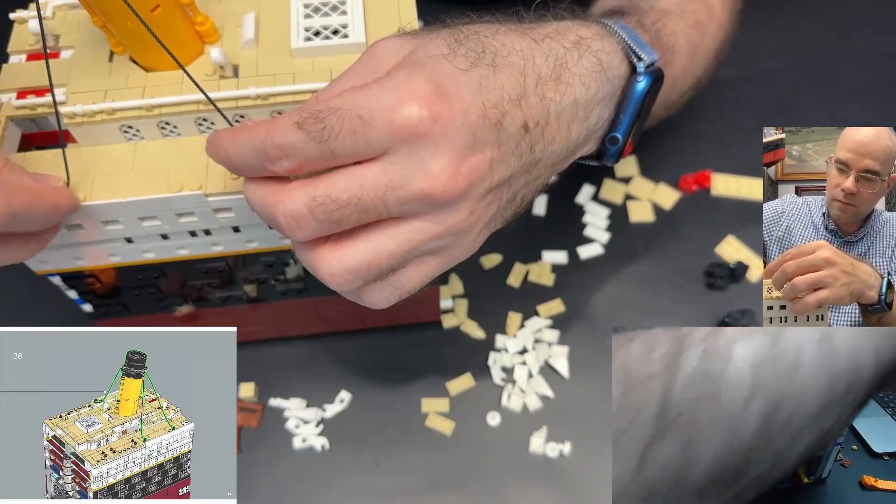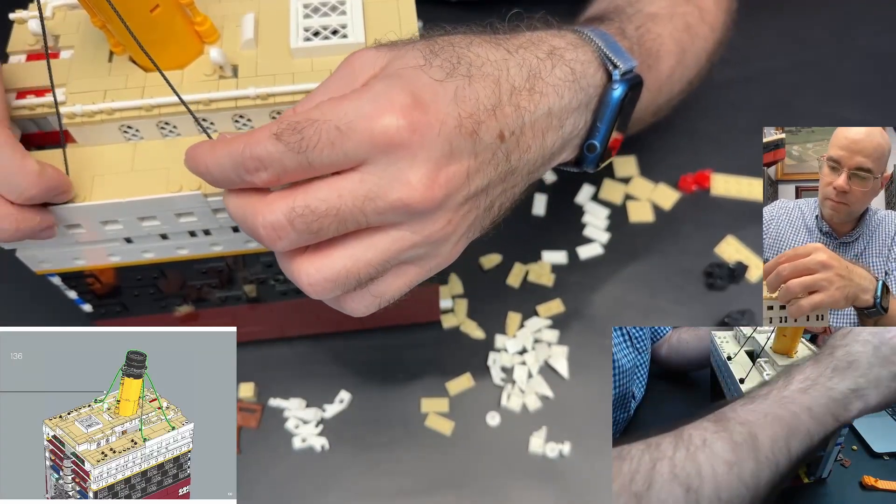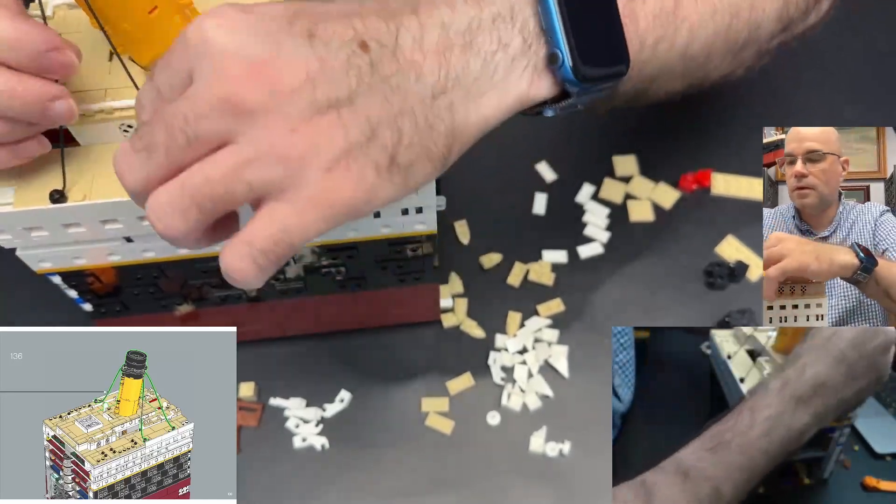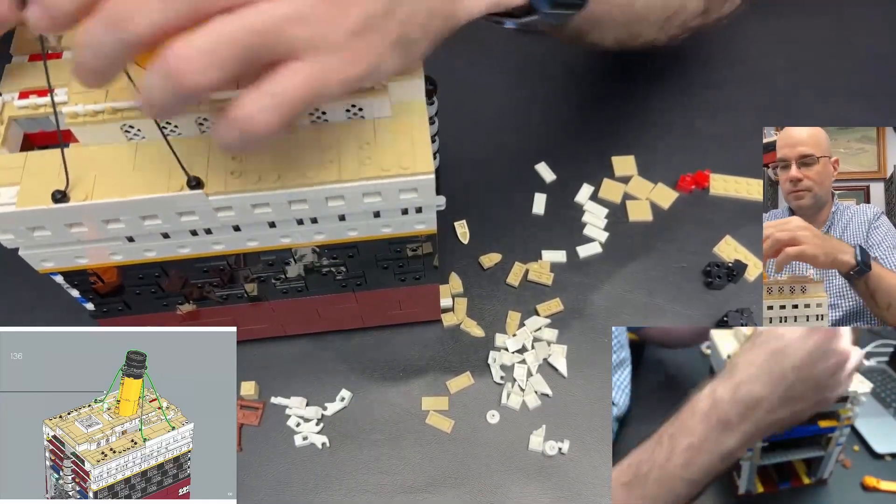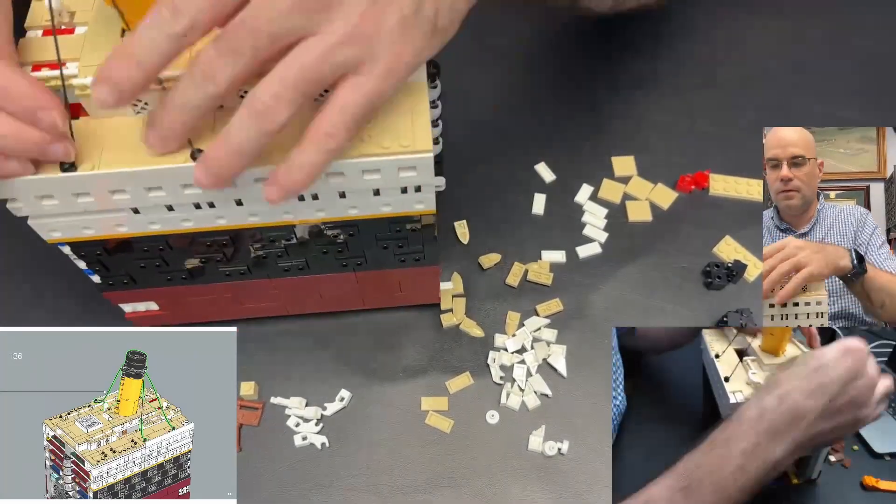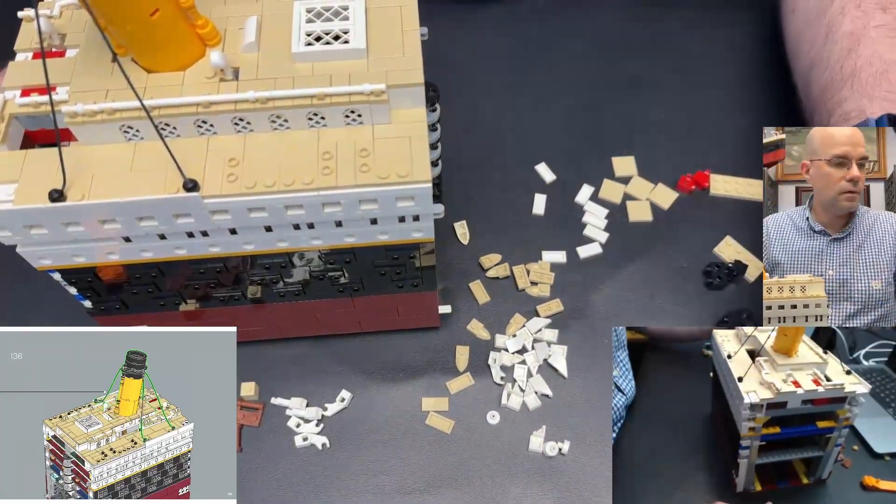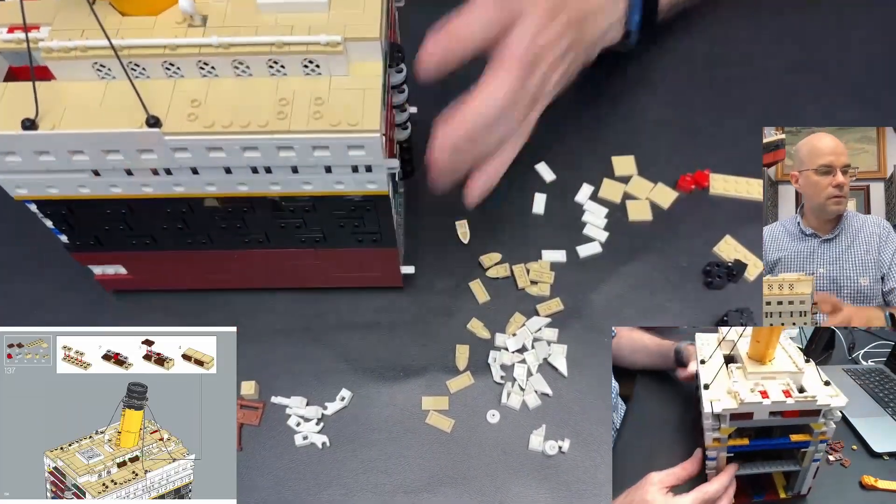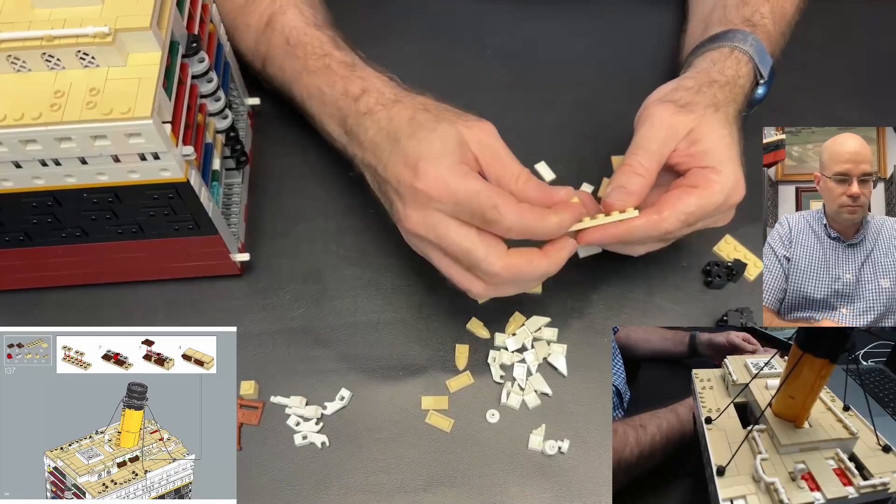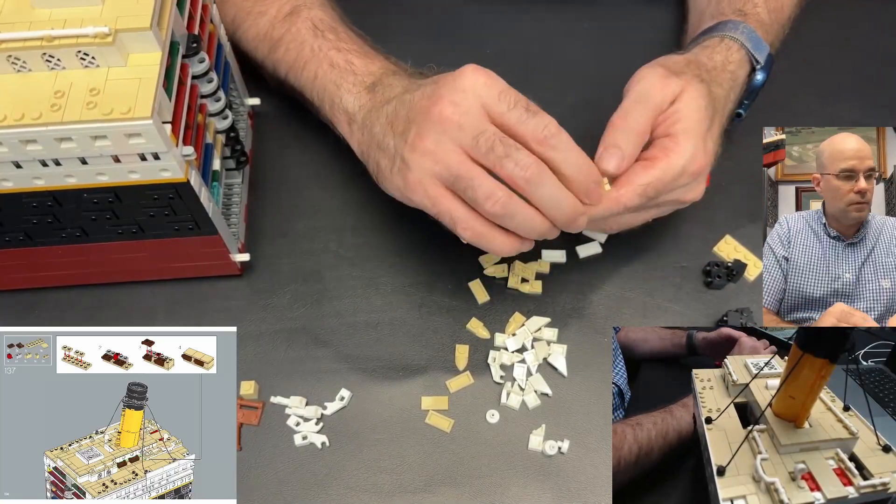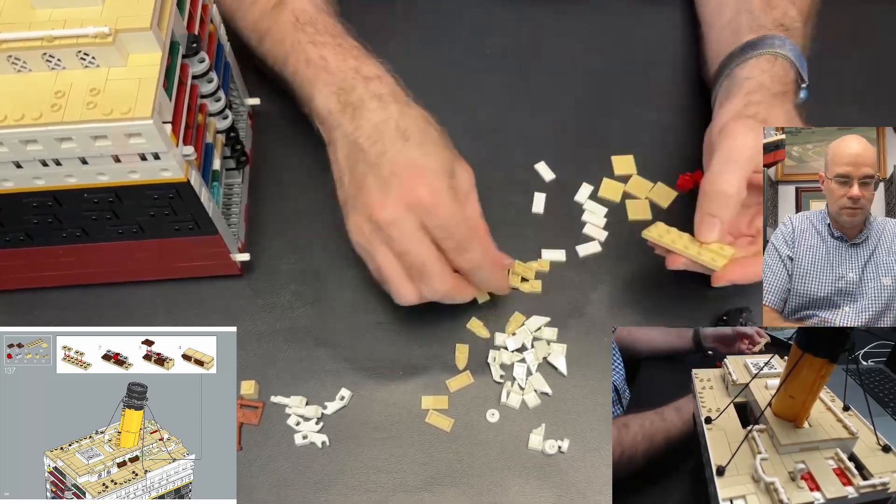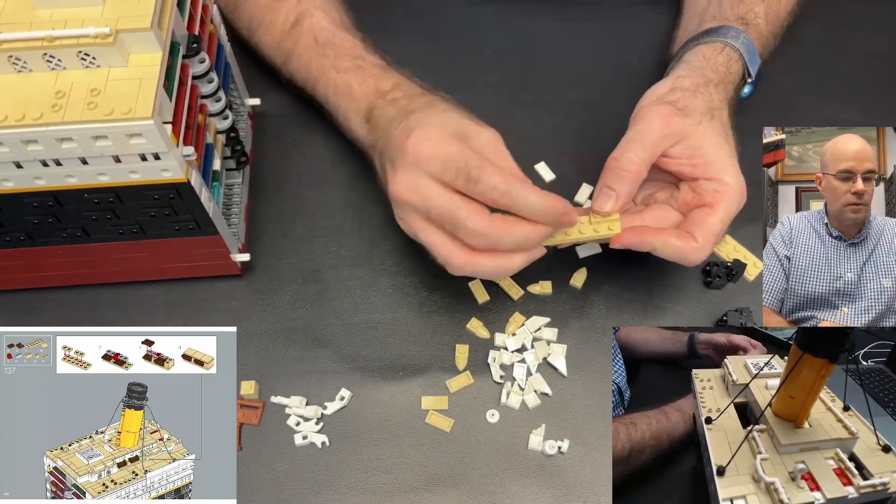And then that one. And that one. That one's a little more taut than the other one. Now, what's this? Kind of lopsided here, like that.